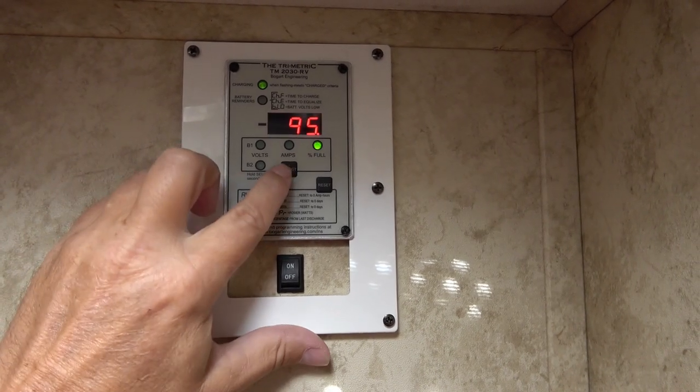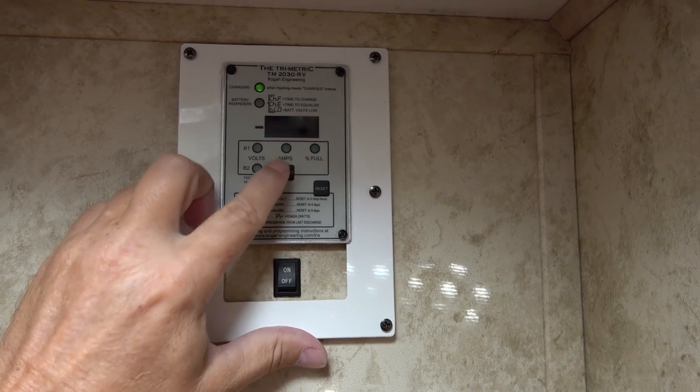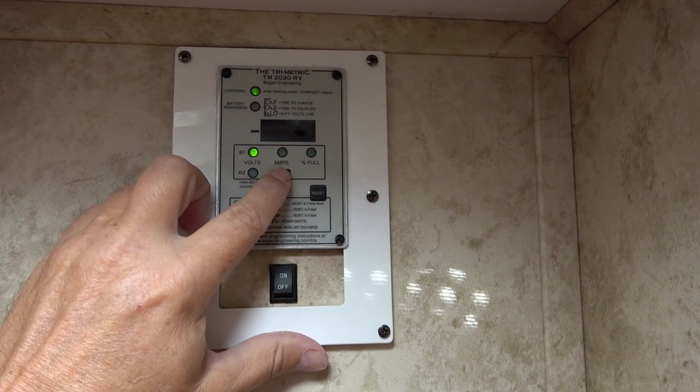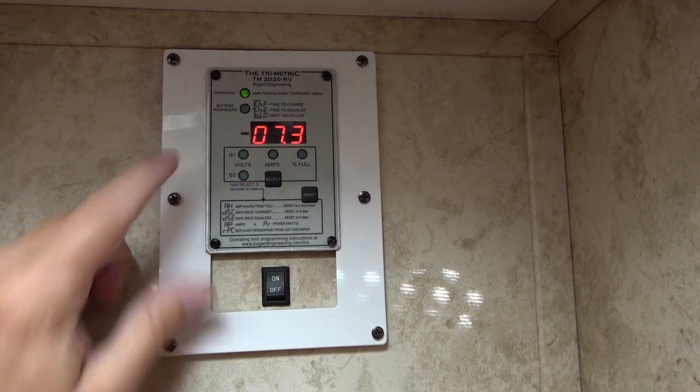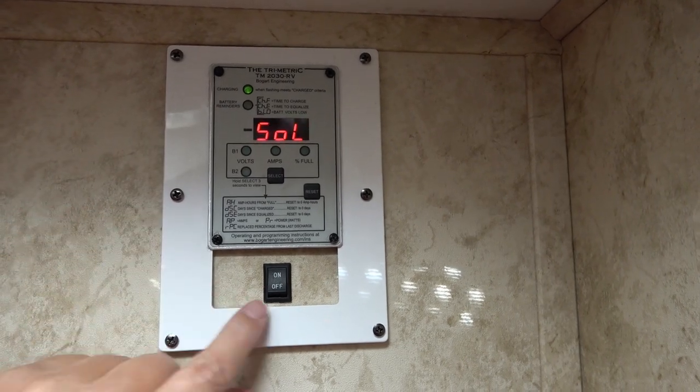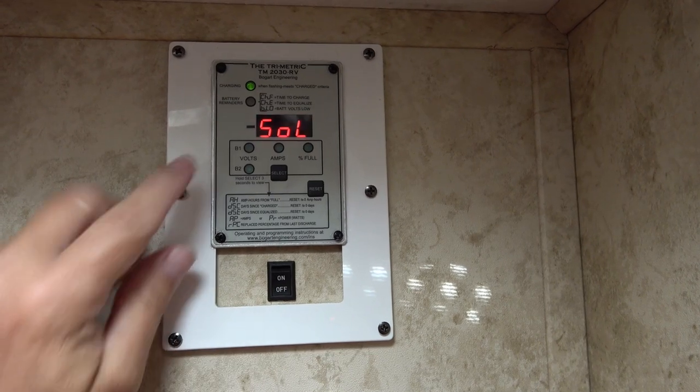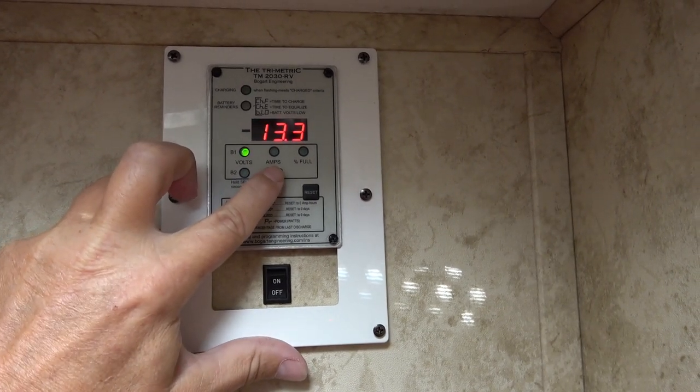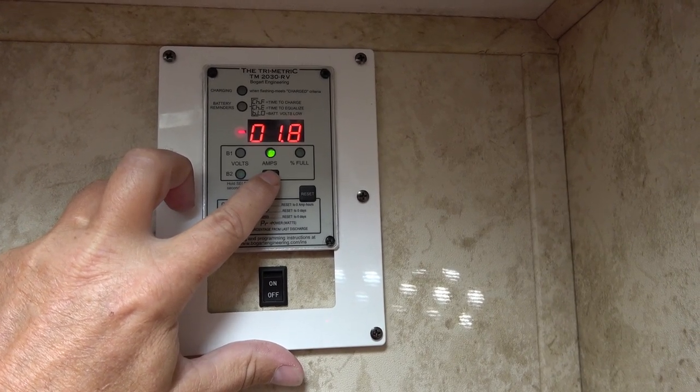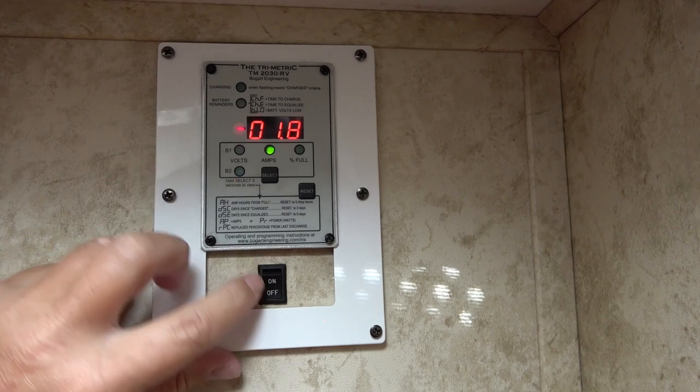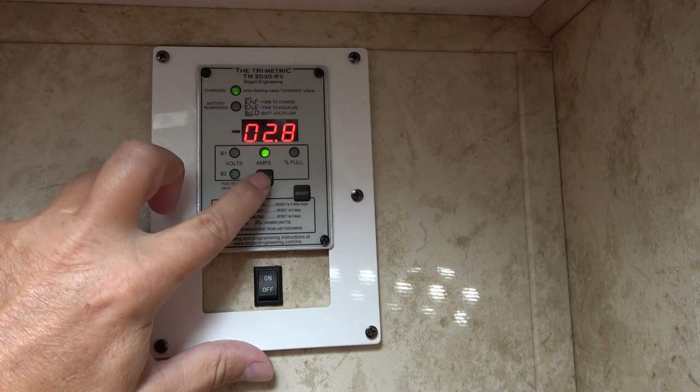So let's just do a little test here. Right now we're sitting at 95 percent charge. So let's go check the solar coming in. 7.3 amps. So this switch should disconnect the solar for us. There we go, bang. So now we're no longer getting solar charge anymore. Cool. Let's try reconnecting it here. There we go.